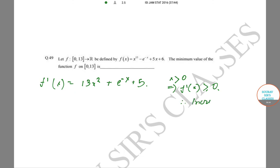Therefore, the function f is an increasing function. And f minima will be equal to f(0), which is just 0 - e⁰, which is -1, plus 6, which is equal to 5. So the correct answer is 5.